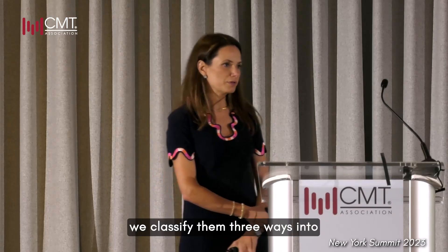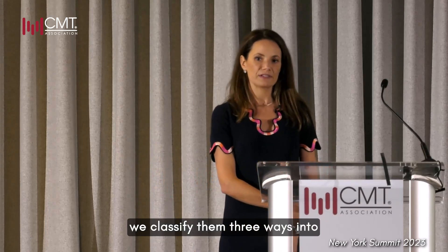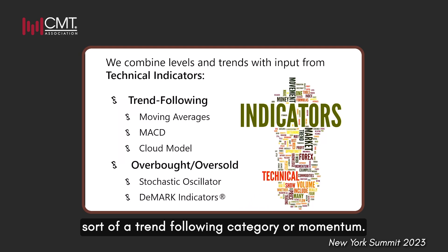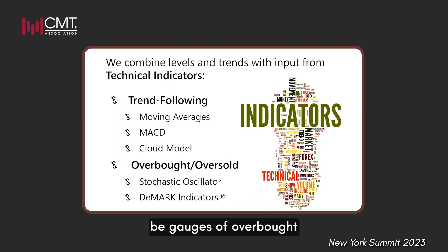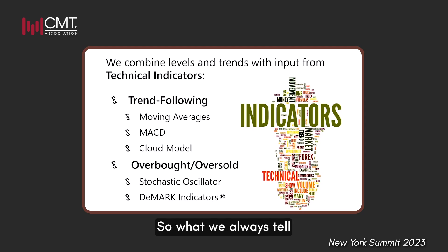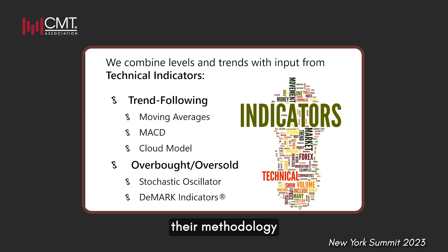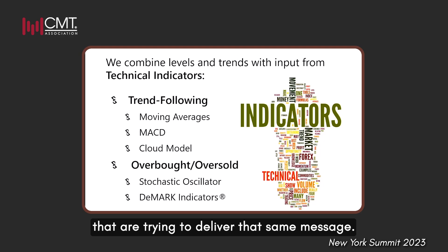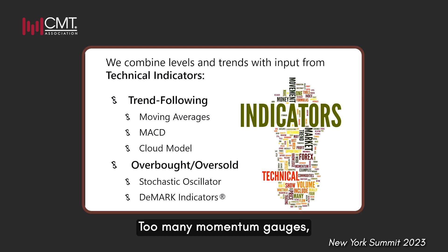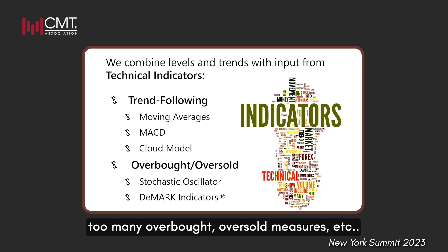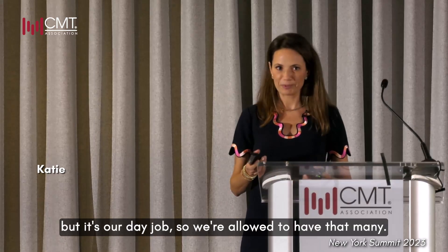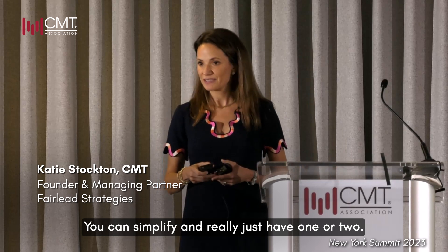We classify technical indicators three ways: into a trend-following or momentum category, as gauges of overbought and oversold readings, and then relative strength. We always tell folks trying to build their strategy not to have too many indicators delivering the same message — too many momentum gauges, too many overbought/oversold measures, etc. We use two or three, but you can simplify and really just have one or two.